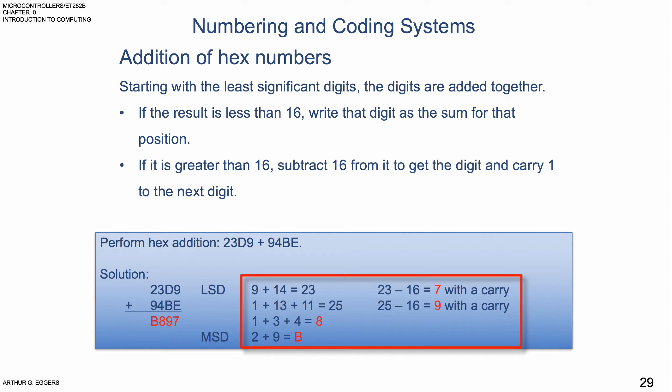You can see in that column we did in fact have a 7. Now the next column has a carry of 1, so that's 1 unit of 16, plus 13, plus 11, and we end up with then a value of 25. 25 is greater than 16, so we subtract 16 from it and we get a 9 now with a carry. So now you can see 9, 7 in our two least significant places.